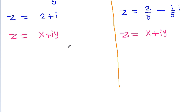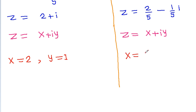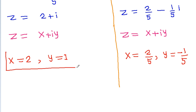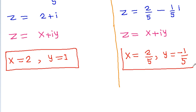Since g equals x plus iota·y, comparing both solutions: from g equals 2 plus iota, we get x equals 2 and y equals 1; from g equals 2/5 minus (1/5)·iota, we get x equals 2/5 and y equals minus 1/5. These are the two solutions of the given equations.